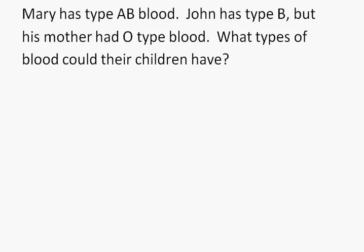Doing this question, Mary is quite easy. She is AB, so she has to have an I^A allele and an I^B allele. However, John, being B type blood, has an I^B allele. We don't know the second allele.